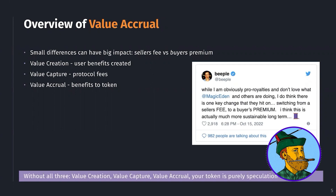If you charge it to sellers, sellers might go to different marketplaces that don't charge a fee, so you'll have less supply on your system. Buyers are going to look for protocols with the most supply and go elsewhere as well. So switching from a seller's fee to a buyer's fee — even if the fee is the same percent — could result in more supply, which means more demand, more growth, and more revenue and success for the protocol. It's important to really think through the nuances of each of these decisions when it comes to value accrual.